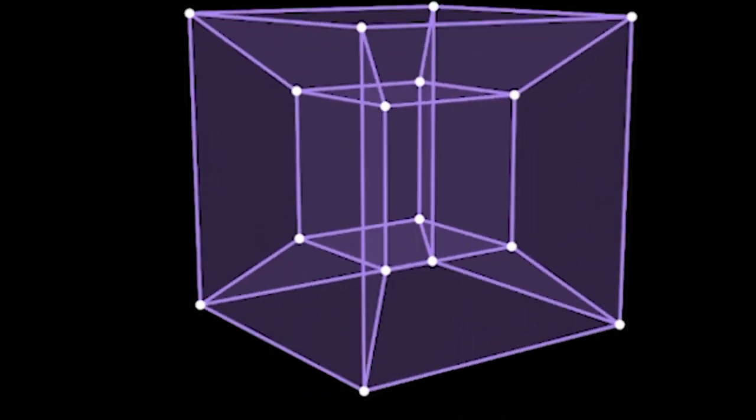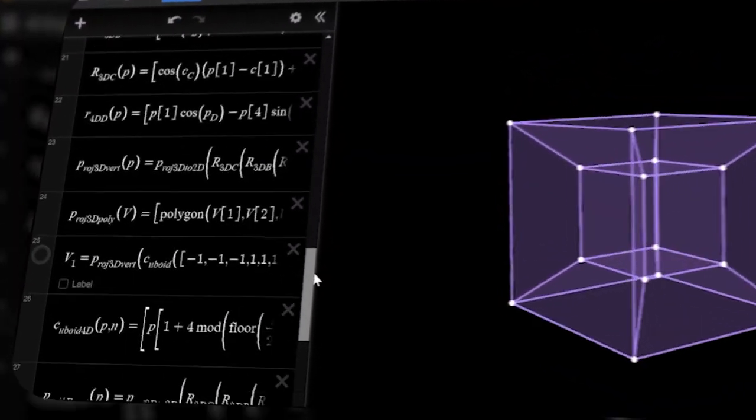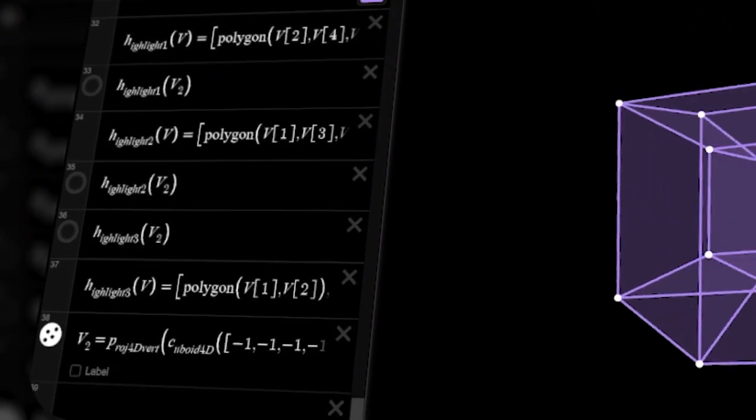This is a cube rotating through four-dimensional space and I built this entirely in Desmos. Just 31 equations and 18 functions is enough to show us a window into the universe of four dimensions.